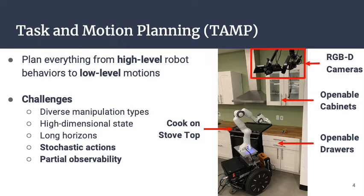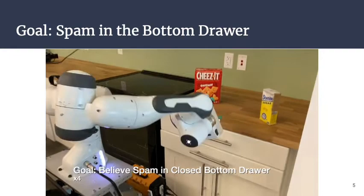In this environment we have two Kinect cameras attached to the world frame, and they can be very easily occluded by fixed objects, movable objects, doors, drawers, and even the robot itself.